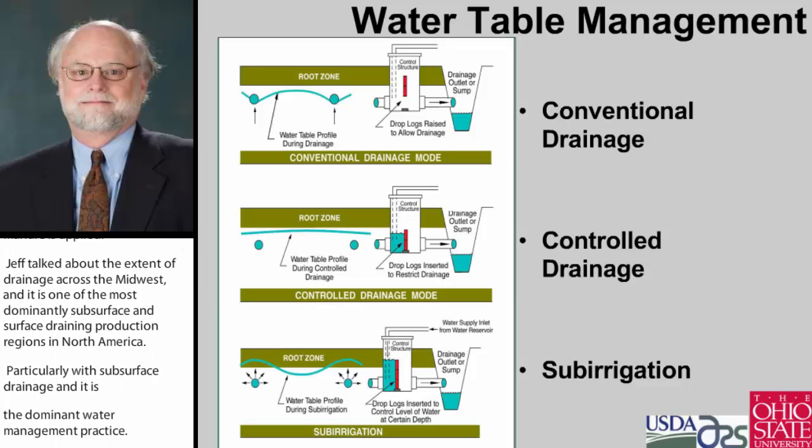With water table management, we can have conventional subsurface drainage. With a device, we can then go to control drainage. And then if we've got cheap water, we can do sub-irrigation if the soil conditions are just right. I'm going to spend most of the time on control drainage.